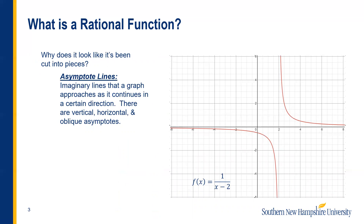An asymptote is an imaginary line that a graph approaches as it continues in a certain direction. There are essentially three types: vertical asymptotes, horizontal asymptotes, and oblique or slant asymptotes. For our purposes today, we're not going to go into the oblique, but we'll definitely talk about the vertical and horizontal.